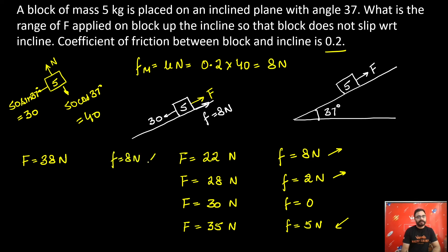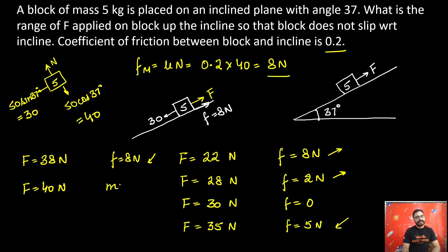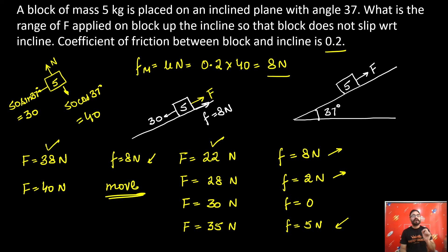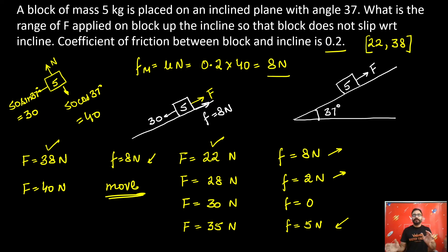If I increase my force to 40 newtons, the requirement of friction becomes 10 newtons, but the maximum available is 8 newtons, so the block will start moving. Therefore, the minimum value of force is 22 newtons and the maximum value is 38 newtons. The range of capital F is 22 N to 38 N, both inclusive.